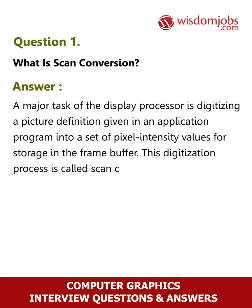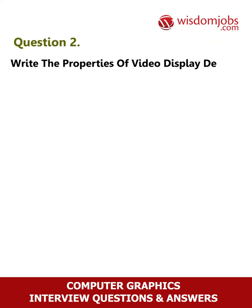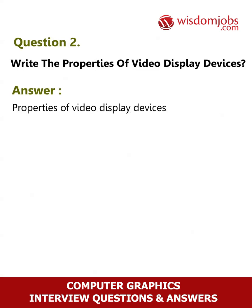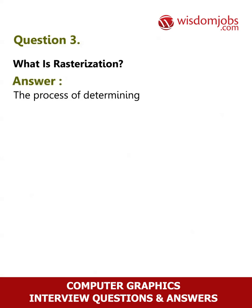Question 2: Write the properties of video display devices. Answer: Properties of video display devices are persistence, resolution, and aspect ratio. Question 3: What is rasterization? Answer: The process of determining the appropriate pixels for representing a picture or graphics object is known as rasterization.